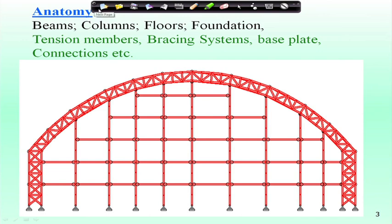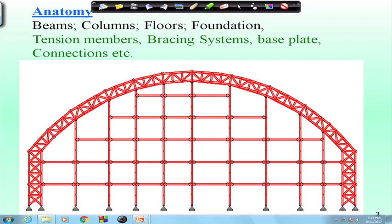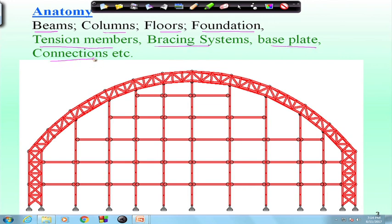Coming to the anatomy of a steel building — for an RC structure, the basic members are beams, columns, floors, and foundation. However, for steel structures, apart from these members, we also come across tension members, bracing systems, base plates, connections, gusset plates, and lug angles.